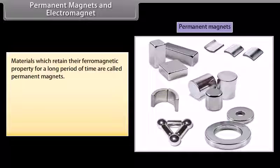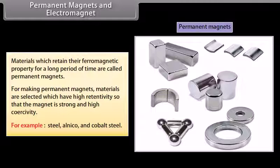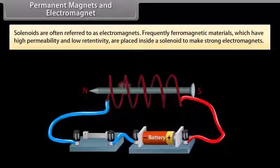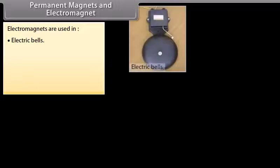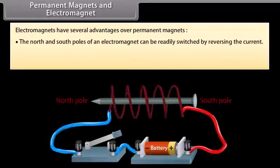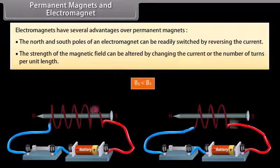Permanent magnets and electromagnets: Materials which retain their ferromagnetic property for a long period of time are called permanent magnets. For making permanent magnets, materials with high retentivity and high coercivity are selected, for example steel, alnico, and cobalt steel. Solenoids are often referred to as electromagnets. Ferromagnetic materials with high permeability and low retentivity are placed inside a solenoid to make strong electromagnets. Electromagnets are used in electric bells, loudspeakers, telephone diaphragms, magnetic resonance imaging (MRI), and cranes to lift heavy materials. Electromagnets have several advantages over permanent magnets: the north and south poles can be readily switched by reversing the current, and the strength of the magnetic field can be altered by changing the current or the number of turns per unit length.